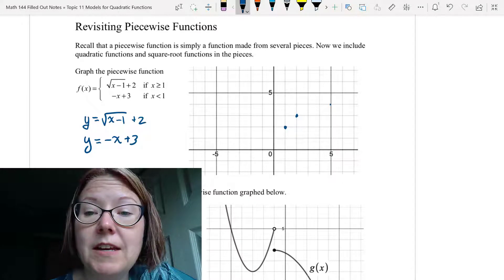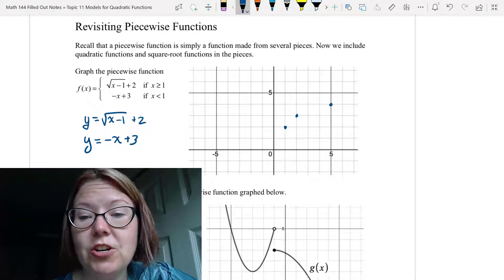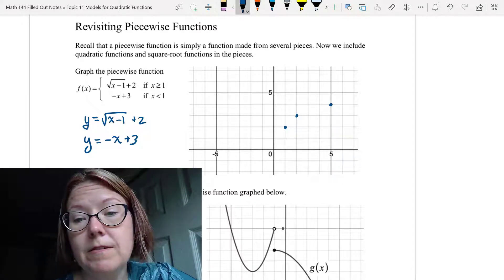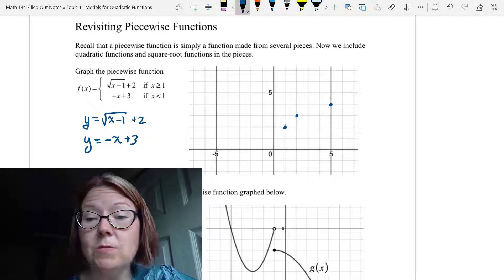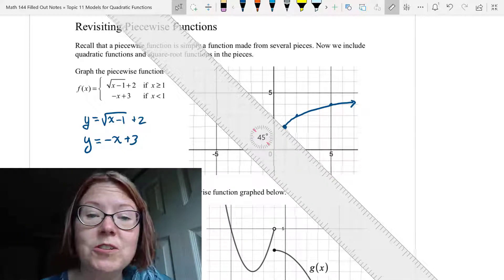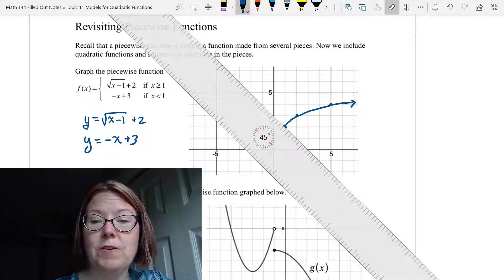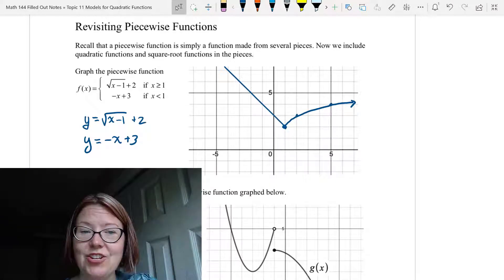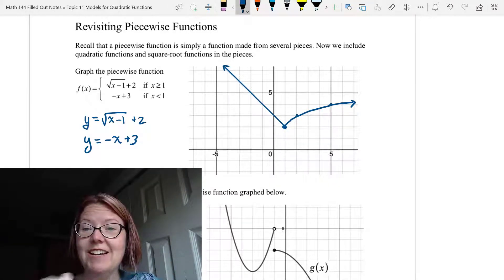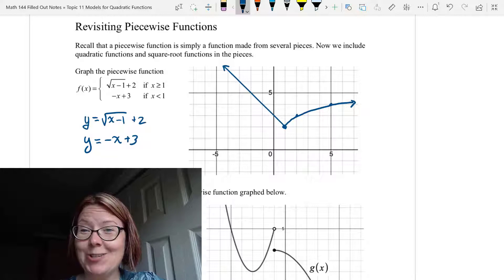I'm graphing (1, 2), (2, 3), and (5, 4), which are all in that square root graph. That one goes to the right. Then I'm going to use the ruler to graph this perfect diagonal that's coming down into that (1, 2) value. And now I have a sketch of the piecewise function. It passes a vertical line test, so all is well.